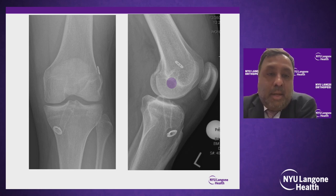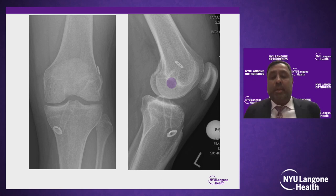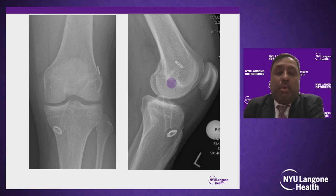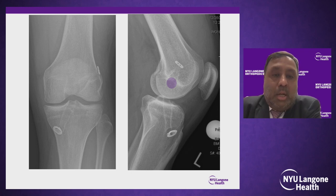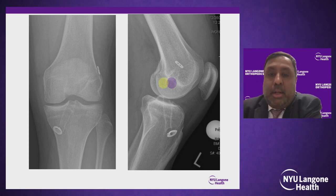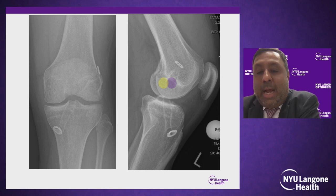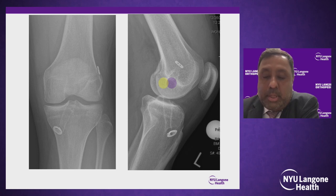This is a case that presented for revision. It's important to look at your femoral tunnel in both the coronal and sagittal planes. In the AP view, the tunnels look reasonably well-placed, but on the lateral view, when you think about that grid, this tunnel is not only shallow or anterior but also high compared to where the anatomic tunnel placement should be.